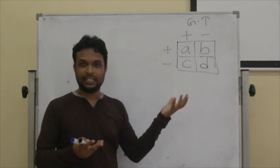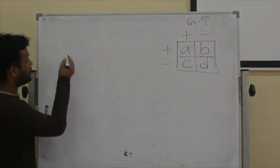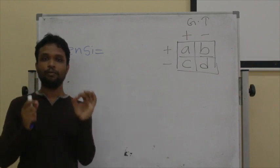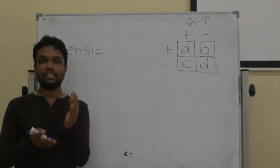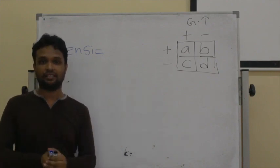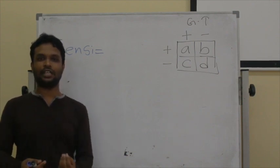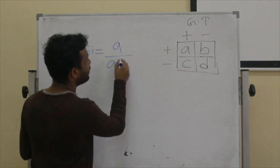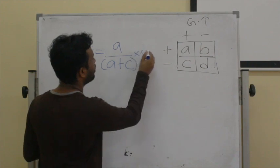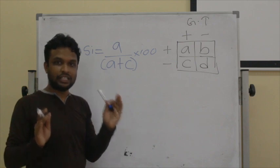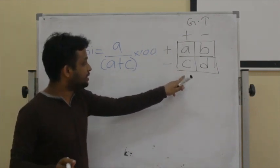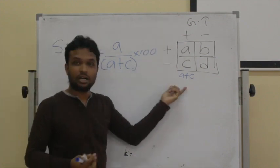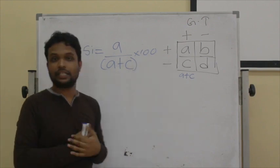Now, with the two-by-two table established, the first method of assessing validity is sensitivity. Sensitivity is the probability of identifying a patient, or the probability of getting a positive screening result if the individual has the disease. Simply put, it is the ability of the screening test to identify a patient as a patient. The formula is A divided by A plus C, multiplied by 100. A is the number of patients correctly identified by the screening test, and A plus C is the total number of patients.